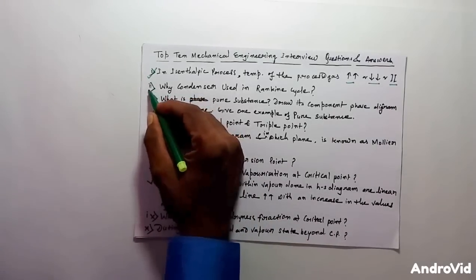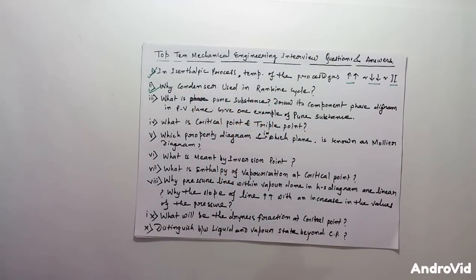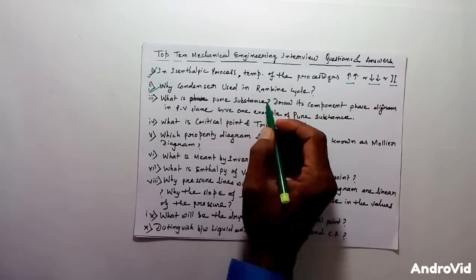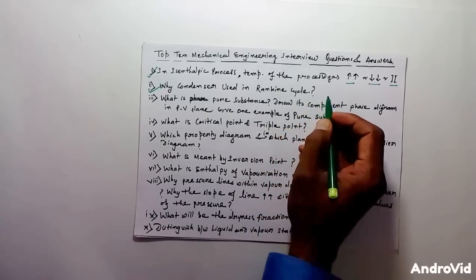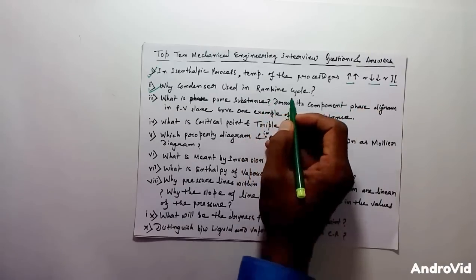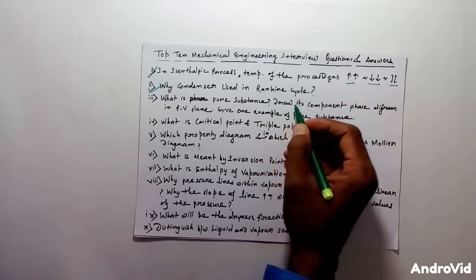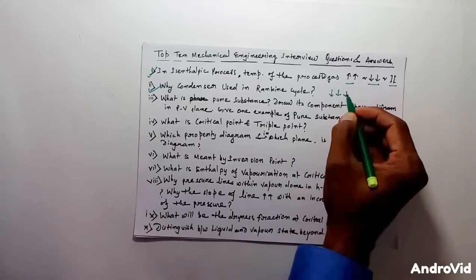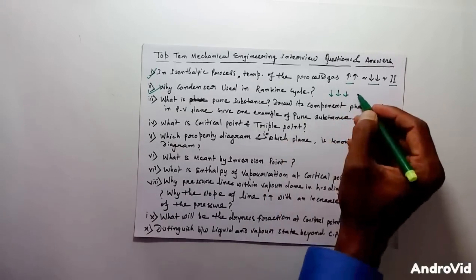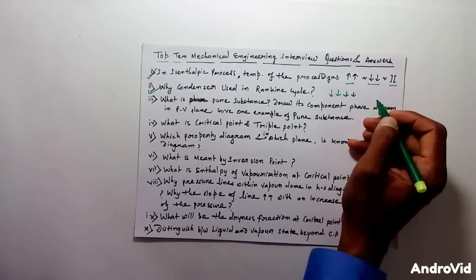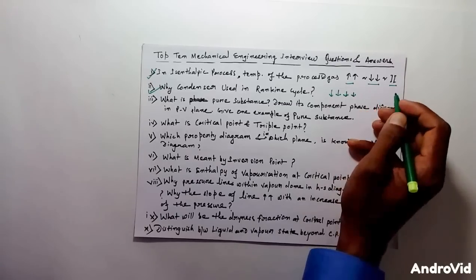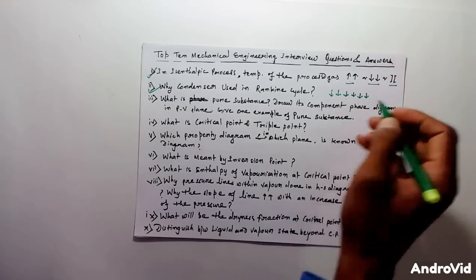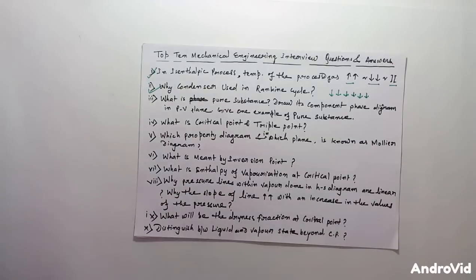The next question is: why is a condenser used in a Rankine cycle? This is a very basic and simple question. The main purpose of using a condenser in a Rankine cycle or any vapor power cycle is to reduce the pressure so that the process of condensation takes place at atmospheric pressure, and the temperature of heat rejection can be reduced. We use a condenser to reduce the temperature of heat rejection and to make the process of heat rejection occur at atmospheric level.